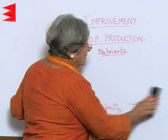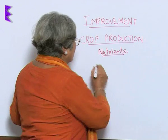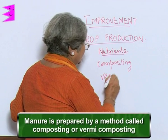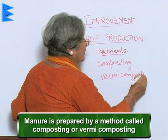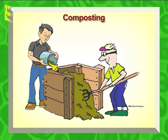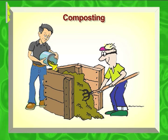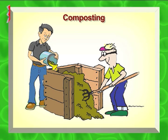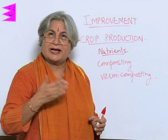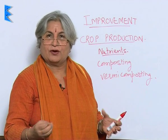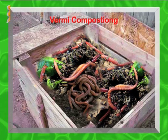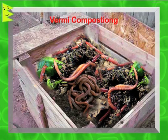Manure is prepared by a simple method called composting or vermicomposting. Composting is simple: collect the waste matter, dig a pit, put the waste in it, add a layer of soil, and leave it. In 2-3 months, all the biodegradable waste changes into manure. If we want to expedite the process and get good quality manure, we add red worms — a kind of earthworm — and what we get is vermicompost.